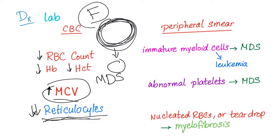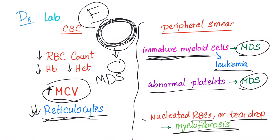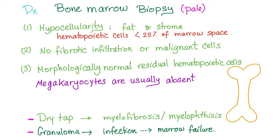Peripheral smear may show immature myeloid cells — if it showed immature myeloid cells, probably there is MDS or leukemia as well. If it showed abnormal platelets, probably again MDS. Nucleated RBCs or teardrop cells suggest myelofibrosis. When your bone marrow is fibrosed, it cries teardrop red blood cells.